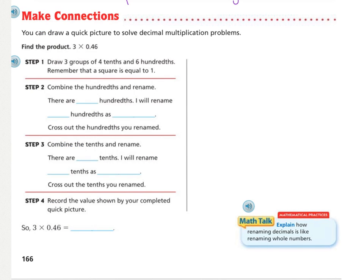Make connections. You can draw a quick picture to solve decimal multiplication problems. Quick pictures are just the quick sketch of a whole, a tenth, and a hundredth. Now it says find the product three times forty-six hundredths. Step one, draw three groups of four tenths and six hundredths.